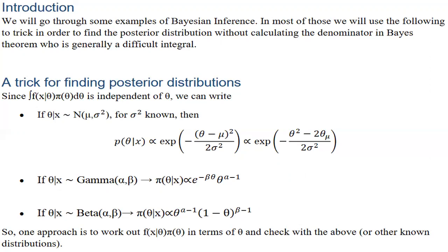The only assumption made so far about θ is that it can take on values in the parameter space. For example, the experimenter may have evidence that θ itself acts as a random variable, for which they may be able to postulate a realistic pdf. The question then is: how can this additional information about θ be used in our estimation problems?